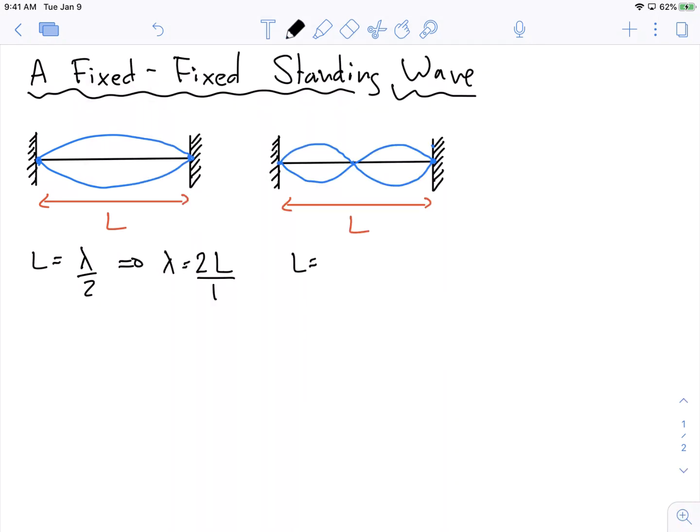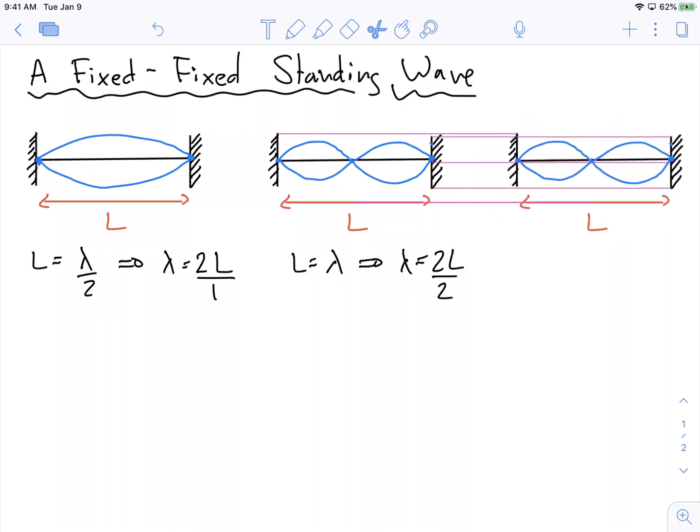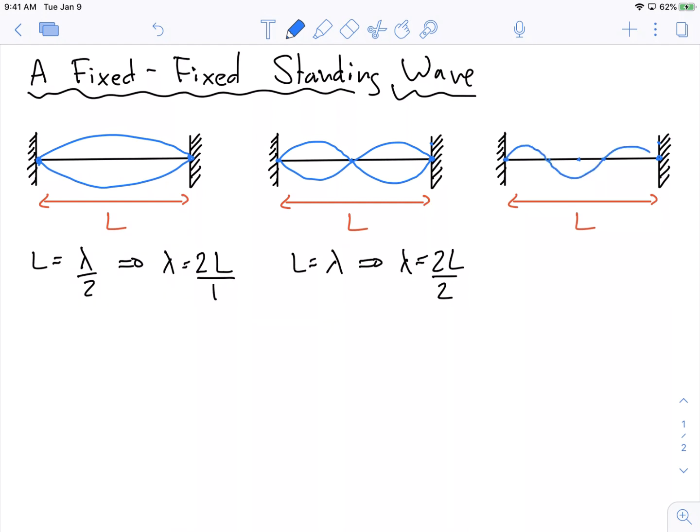For this one, well, length is now just equal to lambda, which implies that lambda is equal to two L over two. Let's do one more so we can see the pattern emerge. The next possible wave has two nodes on it. So it's fixed at this end, goes down, up, down. So it means that there are two places in the middle of the string where there is no oscillation and that there are these three antinodes.